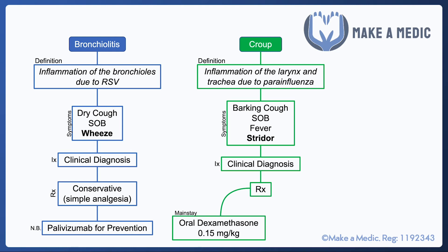With croup, the mainstay of management is a single dose of 0.15 milligrams per kilogram of dexamethasone. If the child has very significant airway compromise they should be put on oxygen, as they're likely to be hypoxic, and nebulized adrenaline is also used to settle down the inflammation and open up those upper airways.